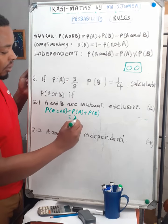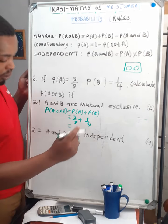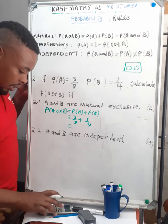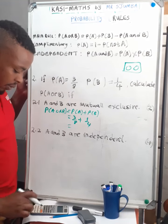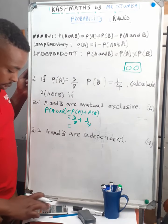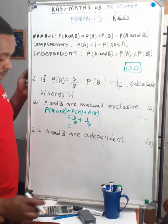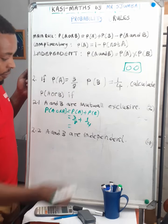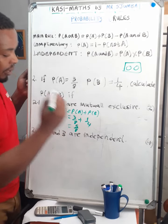So probability of A or B equals 3 over 8 plus 1 over 4, which gives us 5 over 8. The answer is 5 over 8.